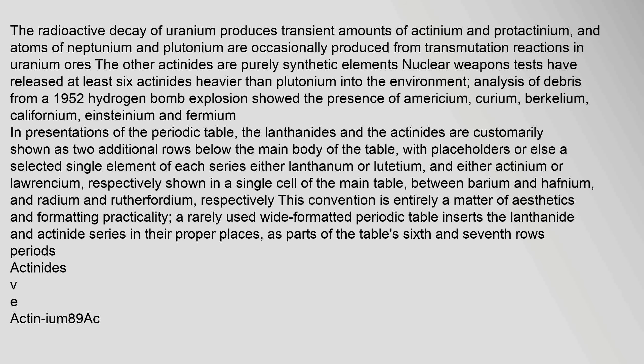Analysis of debris from a 1952 hydrogen bomb explosion showed the presence of americium, curium, berkelium, californium, einsteinium, and fermium. In presentations of the periodic table, the lanthanides and the actinides are customarily shown as two additional rows below the main body of the table.